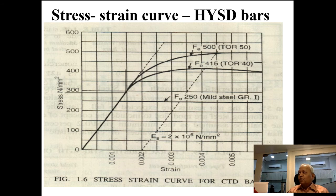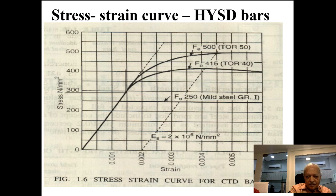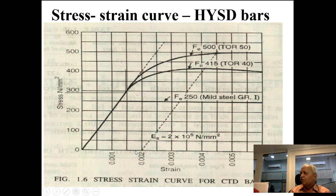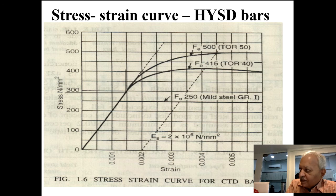The 0.2% proof stress means: if you load the material to a certain stress level, then unload, and the permanent (residual) strain is 0.2% (0.002), then that stress is the 0.2% proof stress. For Fe 415 steel, 415 MPa is the stress at which unloading gives a permanent strain of 0.2%. This is used instead of yield stress for tor steel and similar high-strength steels.